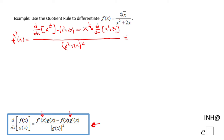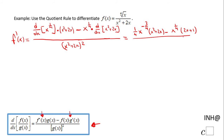So my next step here will be to compute the derivatives. The derivative of x to the 1 over 4 will be 1 over 4 times x to the 1 over 4 minus 1, which is negative 3 fourths, times x squared plus 2x, minus x to the 1 over 4 power. And the derivative of x squared plus 2x is 2x plus 2, over x squared plus 2x to the second power, which is a good form sometimes.